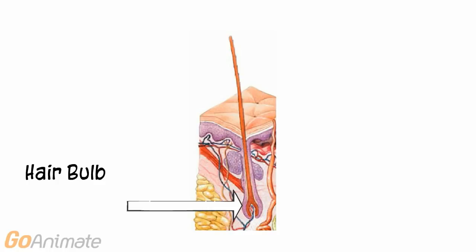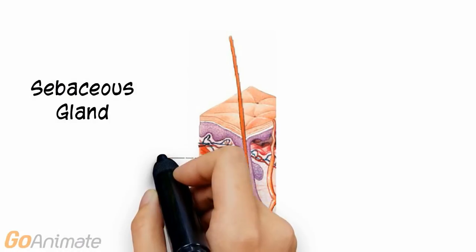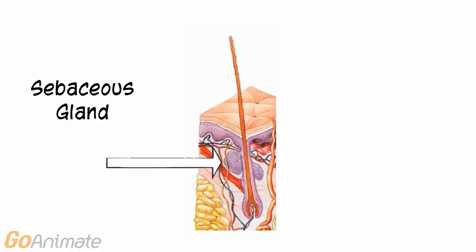Hair begins to grow at the base of the hair follicle in a structure called the hair bulb. The hair bulb is surrounded by a hair papilla that contains blood vessels and nerves. The cells of the hair bulb divide and push the cells toward the surface along the hair root and shaft.